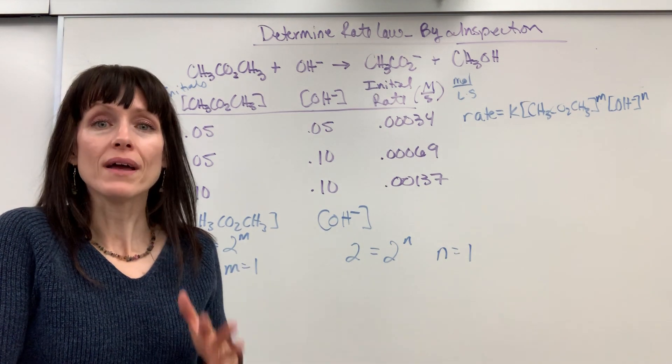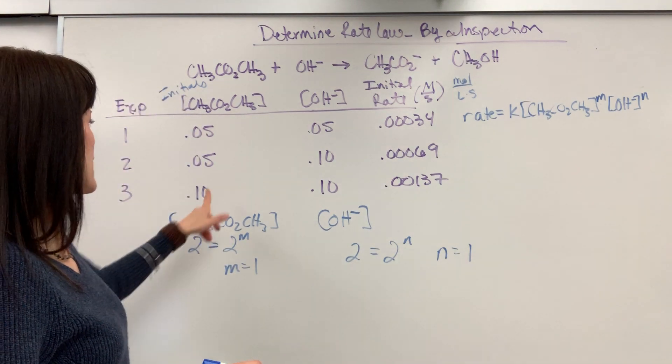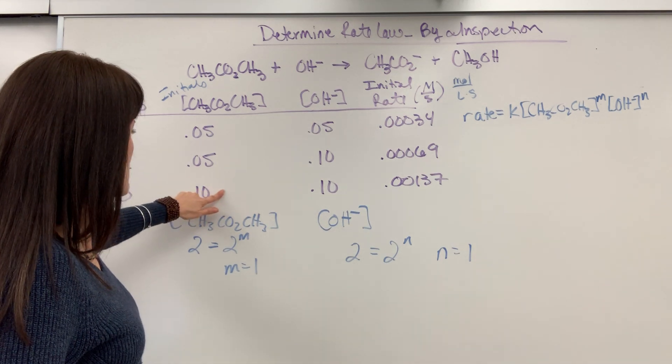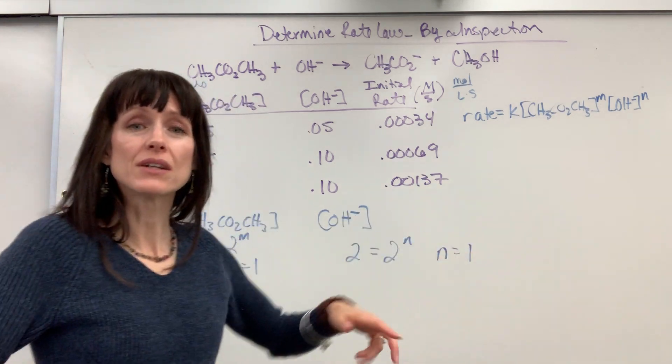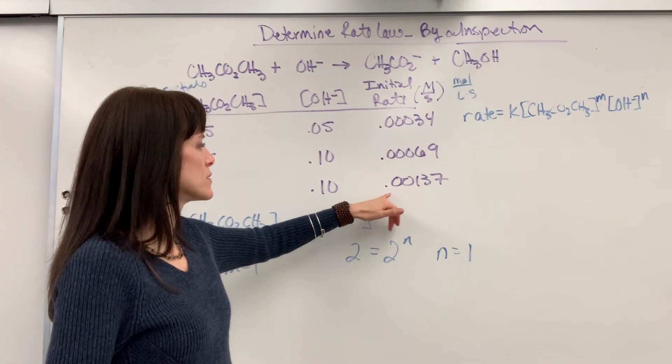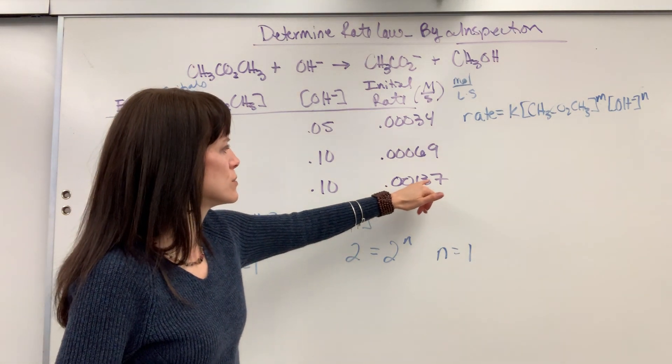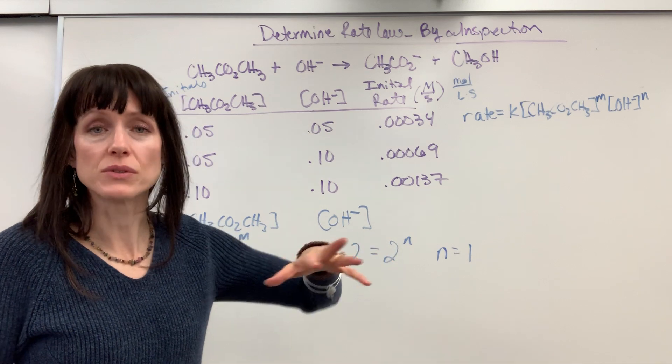Now, what if it was a second order? What would that look like? Think about that for just a second. If I doubled this and it was a second order, what would have to happen to this? It would have to increase by a factor of 4. It would come out to be pretty close to 0.00276, something like that, to be really close. The numbers would look like this.